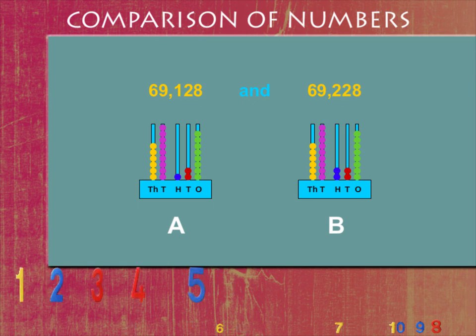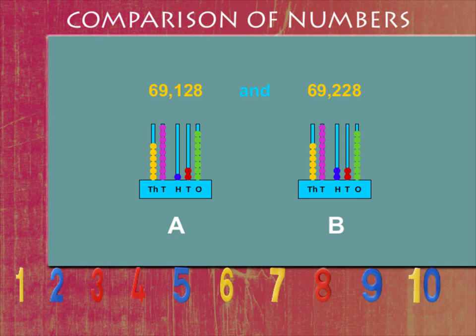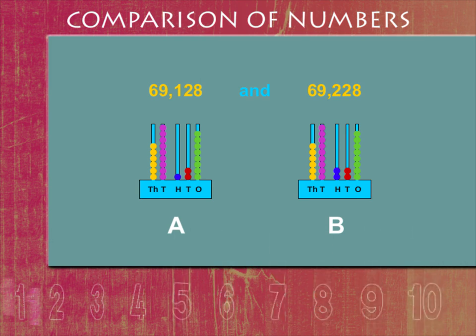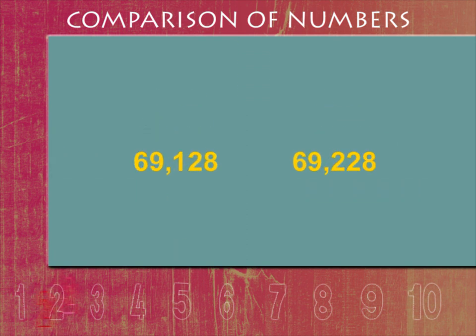So, which number is greater and which is smaller? The number A has 1 hundred, so it is smaller than number B, which has 2 hundreds. So, 69,128 is less than 69,228.